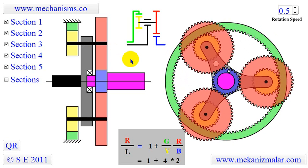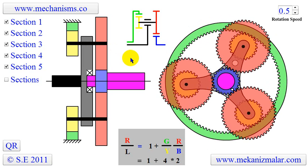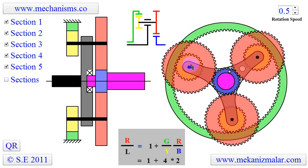Planetary gearing is a gear system that consists of one or more outer gears, or planet gears, revolving around a central sun gear.